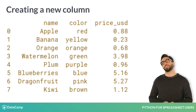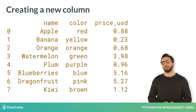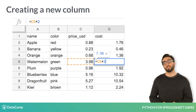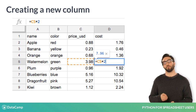Shifting gears, what if we wanted to create a new column? What if we bought two of each fruit — how could we make a cost column? In a spreadsheet, the process would look something like this: take each price cell and multiply by two, then drag the formula all the way down to the bottom of the data.